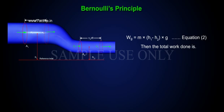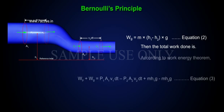Then, the total work done is, according to work energy theorem, WP plus WG is equal to P1A1V1DT minus P2A2V2DT plus MH1G minus MH2G, equation 3.